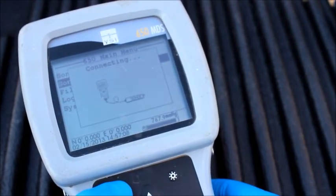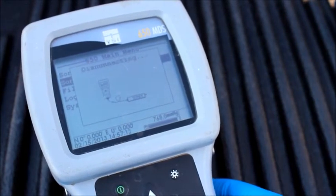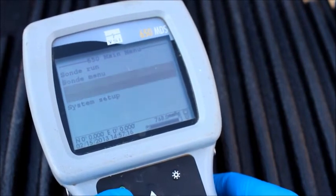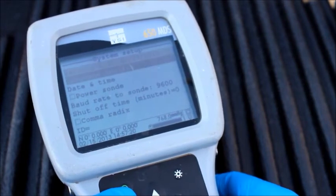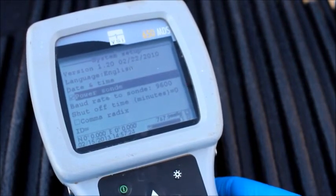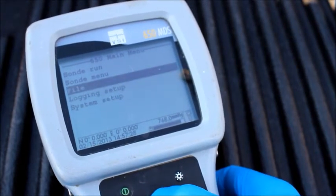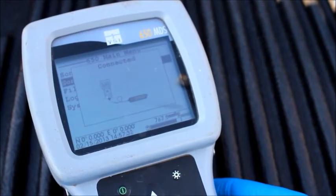Once the new batteries are installed, you may notice that the 650 display no longer connects to the sonde. Press the escape button, scroll down, and select the system setup screen. If the power sonde option is not checked, scroll to it and press the enter button. The handheld display should now be able to send power to the sonde and connect.